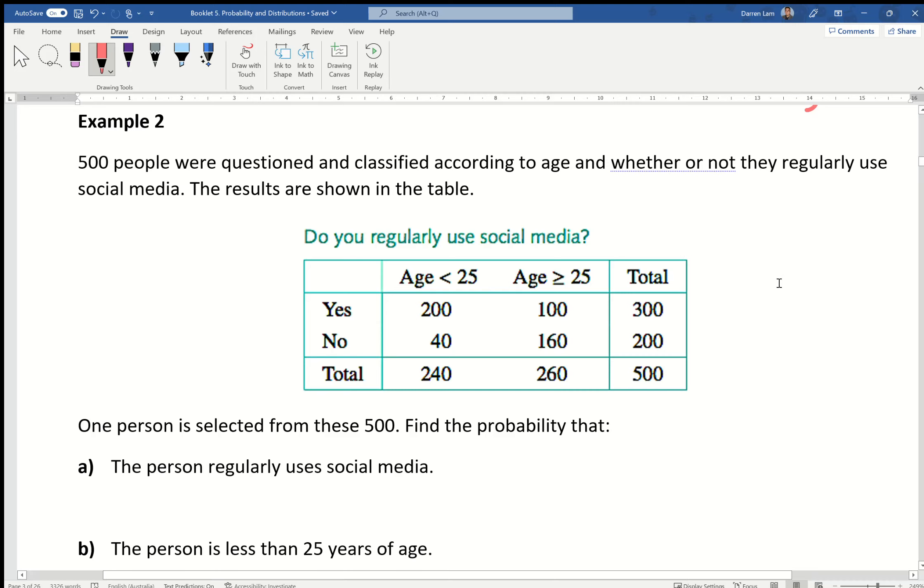In this situation we've got 500 people questioned and classified according to age and whether or not they regularly use social media. The results are shown in the table. We can see on the bottom right, that's a total of how many people were questioned. I double check with the stem of the question: 500. In each column, this column represents people under 25, this one represents people over or equal to 25, and the rows represent regular use of social media.